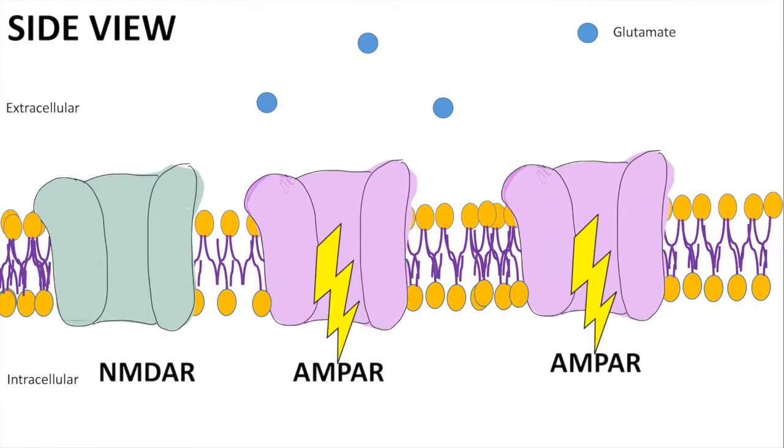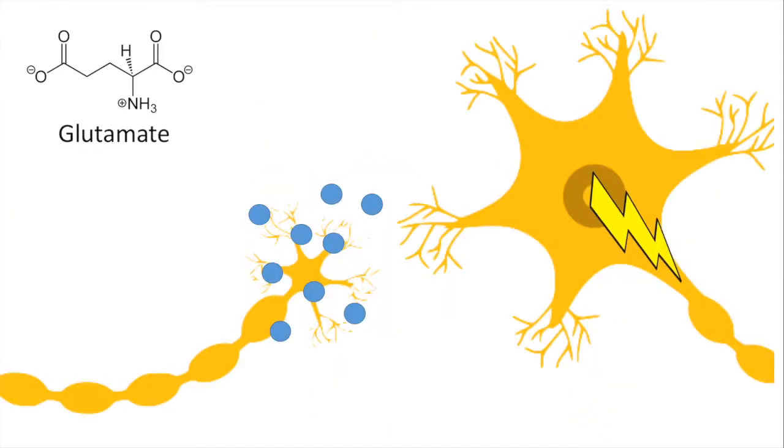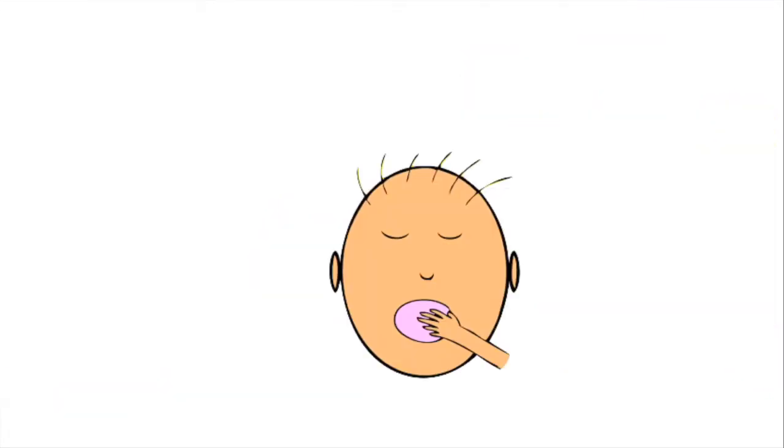With more AMPA receptors in the dendrite, the dendrite is now more sensitive to glutamate release. This process also increases glutamate release from the axon terminal of the presynaptic neuron. That's a quick summary of long-term potentiation.